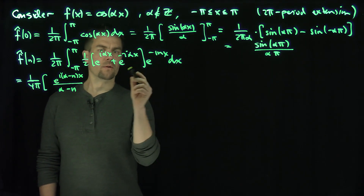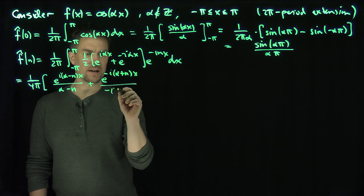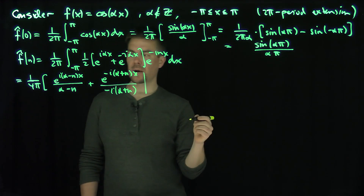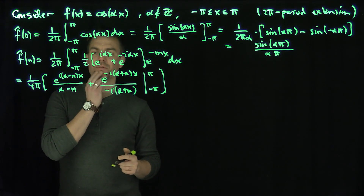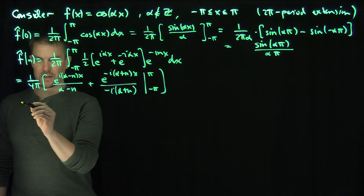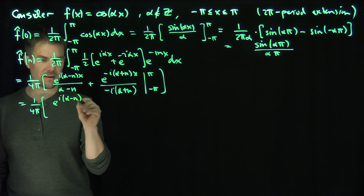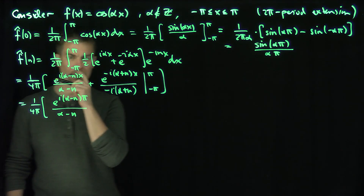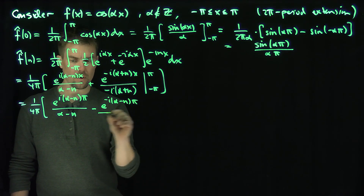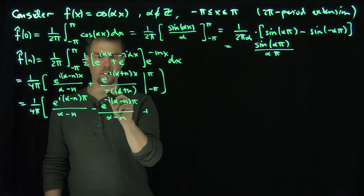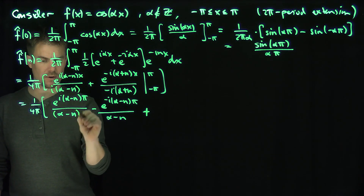Pulling everything out, I get 1 over 4π. Then we have e^(i(α-n)x) integrating to e^(i(α-n)x) over i(α-n), and over here we have plus e^(-i(α+n)x) over (-i)(α+n), evaluated from x equals negative π to π. There's an i in the denominator — I can't forget that because we need the sign in our final answer.